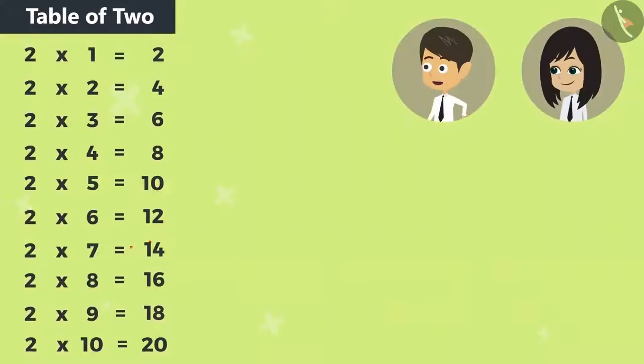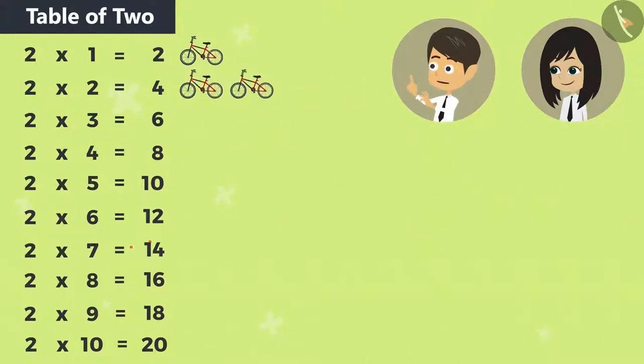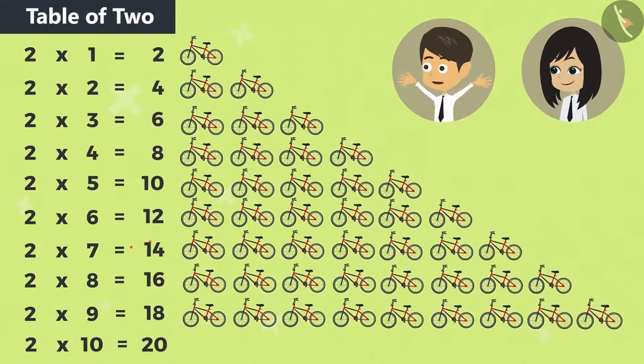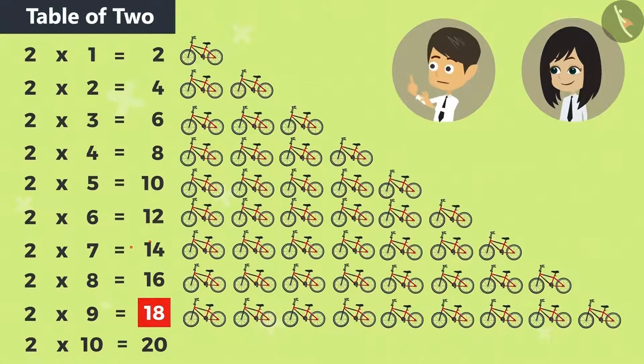Taking a look at this table, we can find that 1 bicycle has 2 tires, 2 bicycles have 4 tires. Similarly, 9 cycles will have 18 tires.